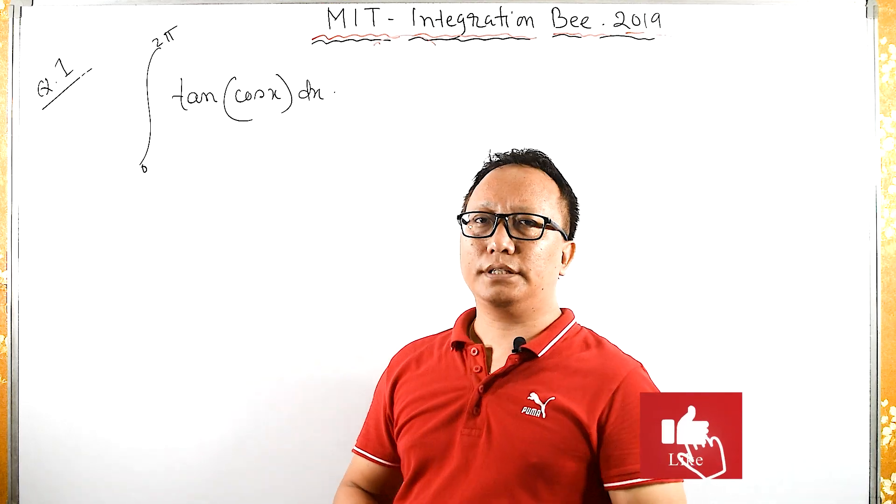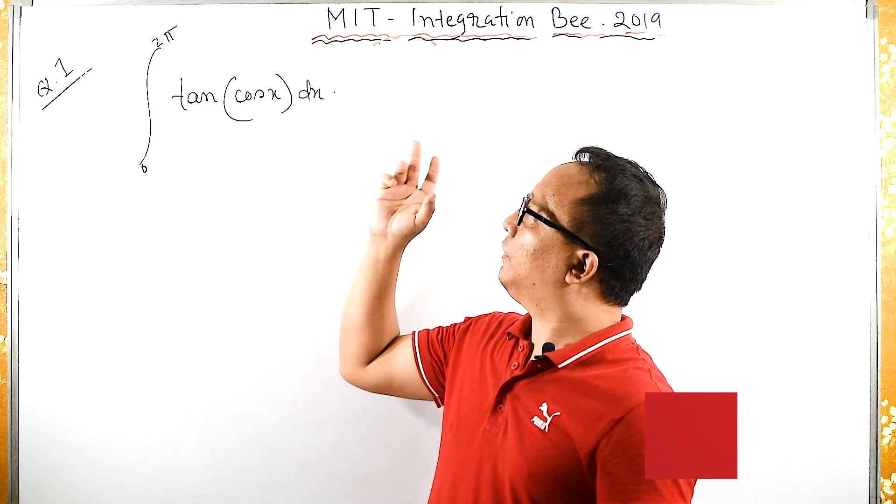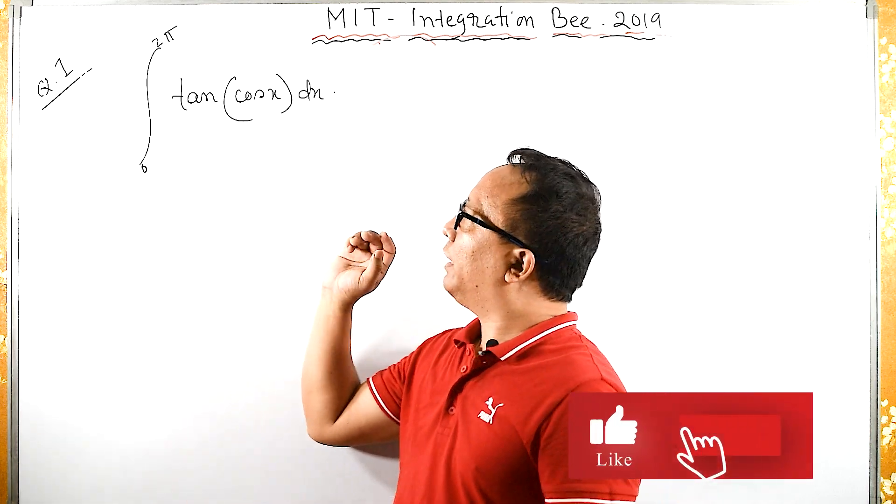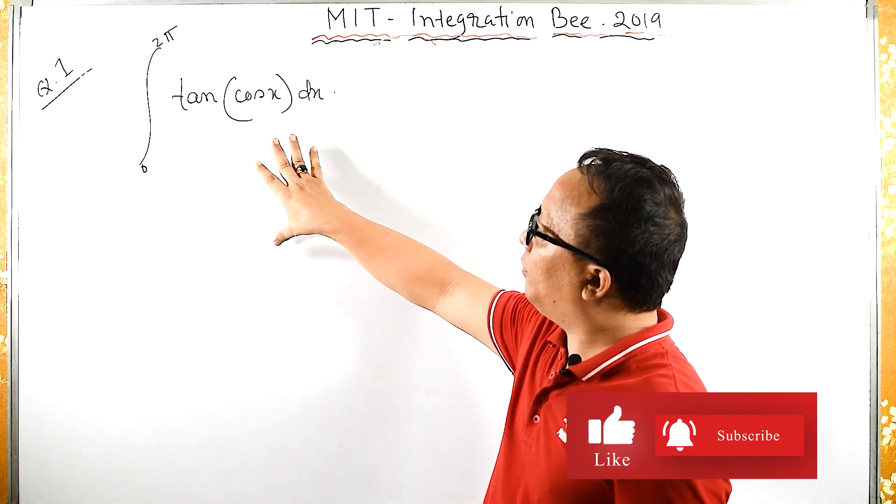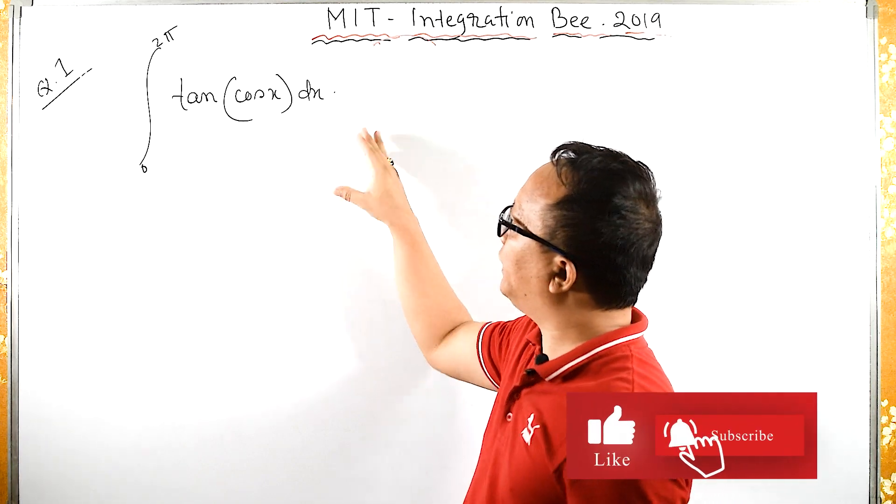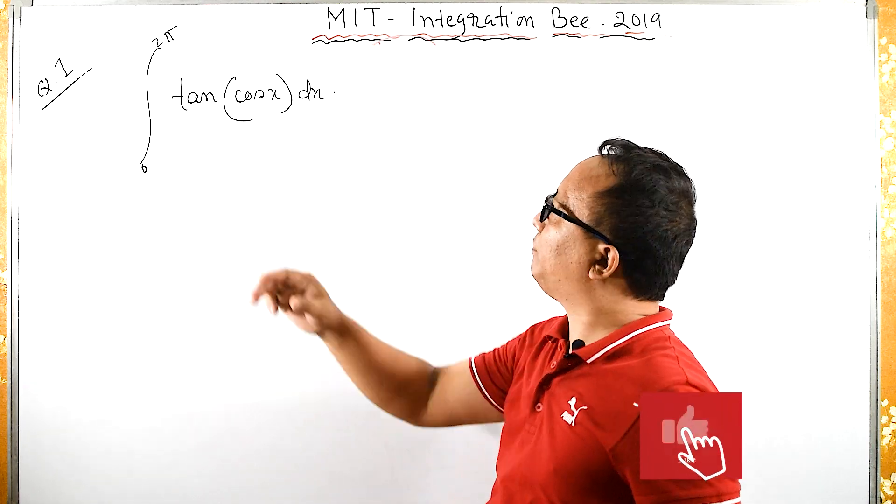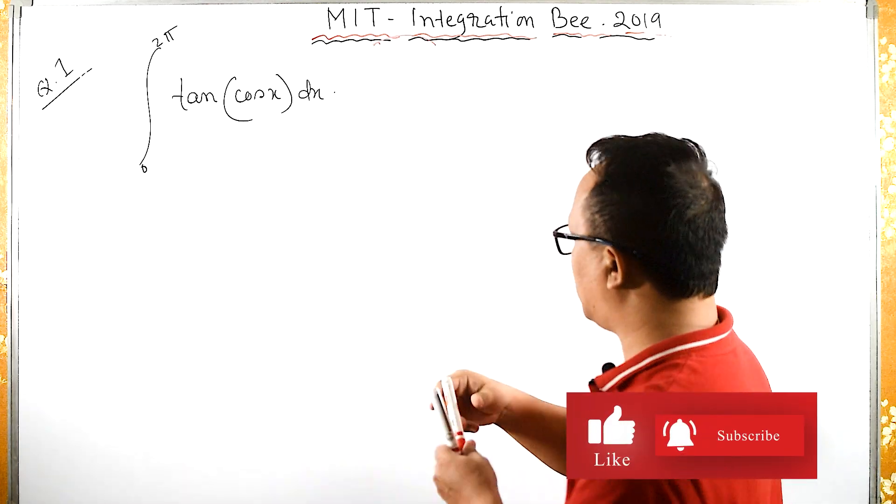Welcome back. This integration problem was asked in MIT's Integration B qualification exam in 2019, and this is question number one. The value of this integral looks like it equals zero. Why? Because we have tan, and what about cosine?